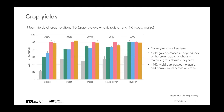Jumping directly to first data: mean crop yields across rotations show that yields are stable in all systems, but there is a crop-dependent yield gap between organic and conventional systems. The gap ranges from up to 40% for potato down through wheat, maize, grass clover, and soybean. On average we have around 15% yield gap between organic and conventional systems across all crops.